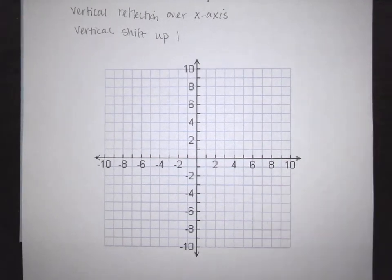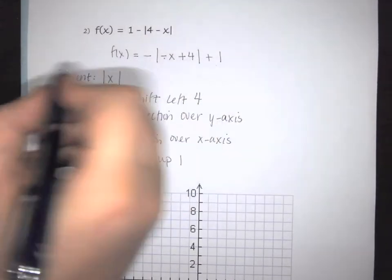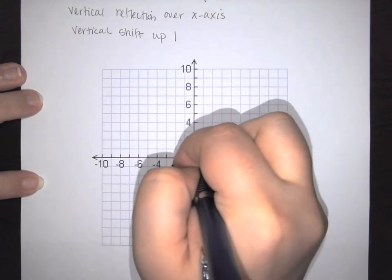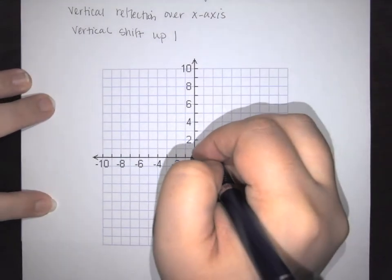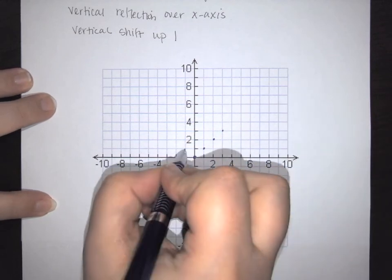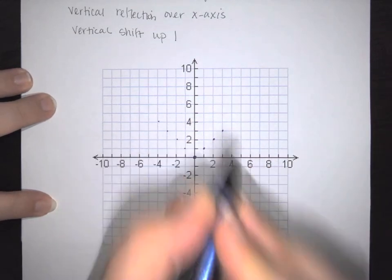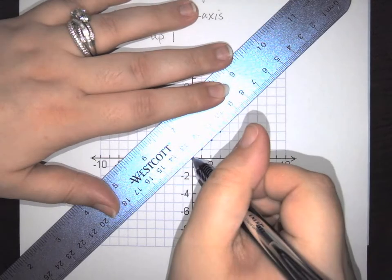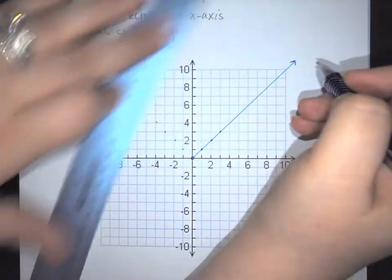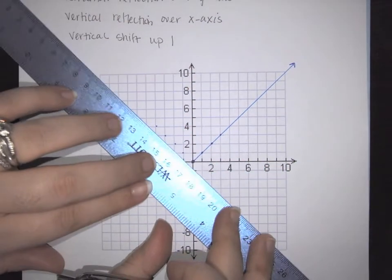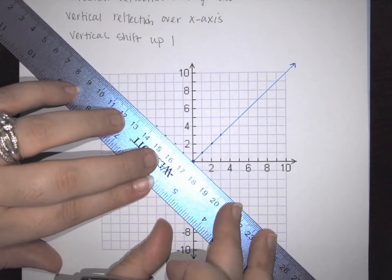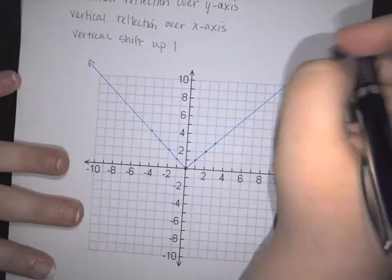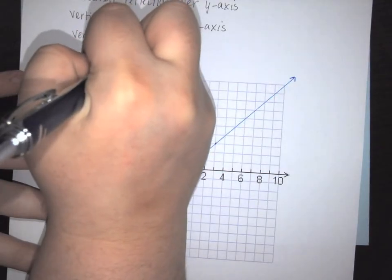Let's start with the parent function — I'll graph it in blue. The absolute value starts at the origin and goes straight up on both the positive and negative sides. Using a straight edge to draw it in, here is my absolute value of x.